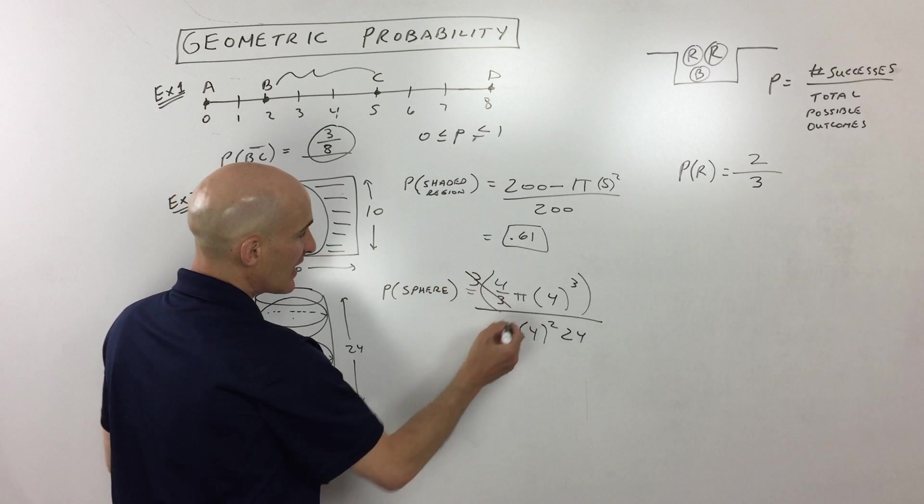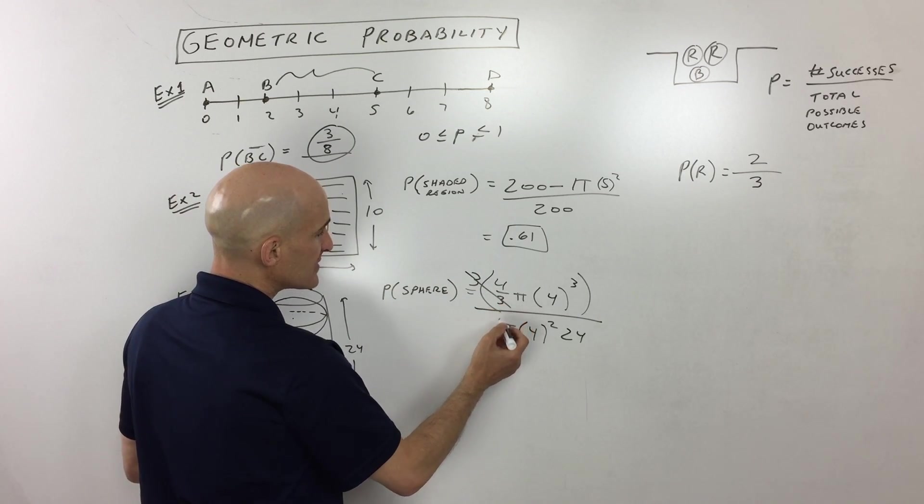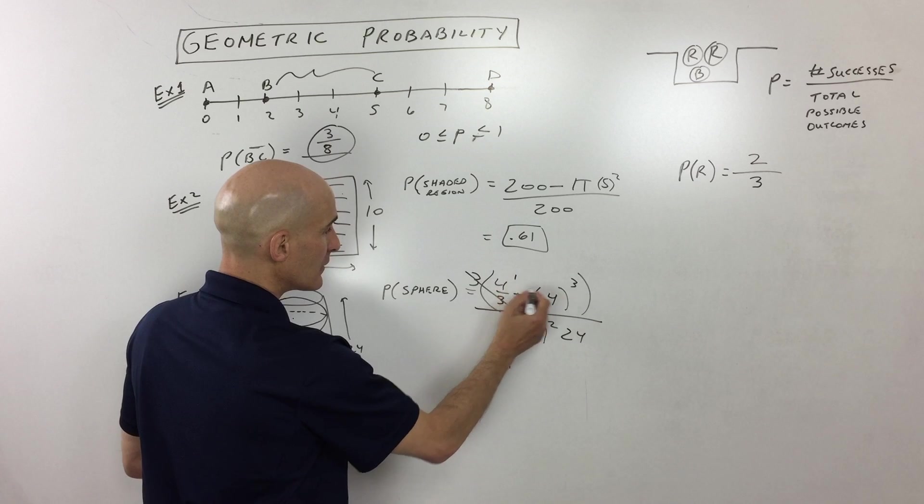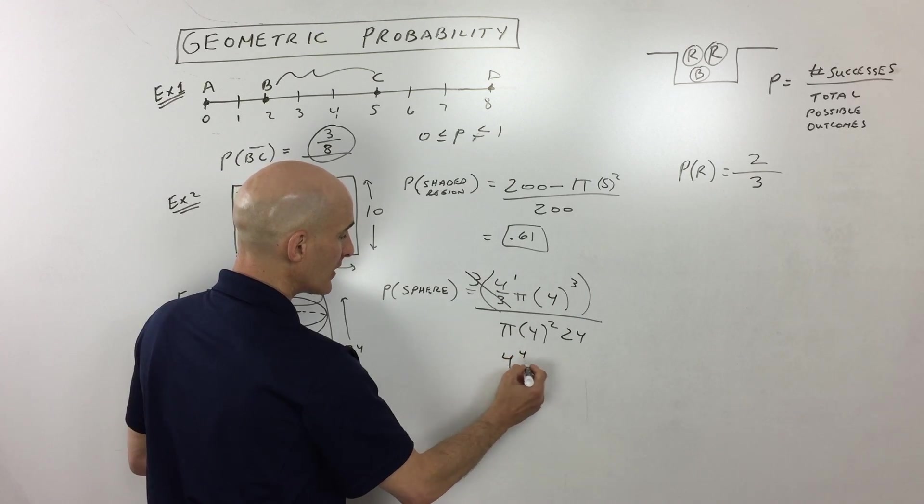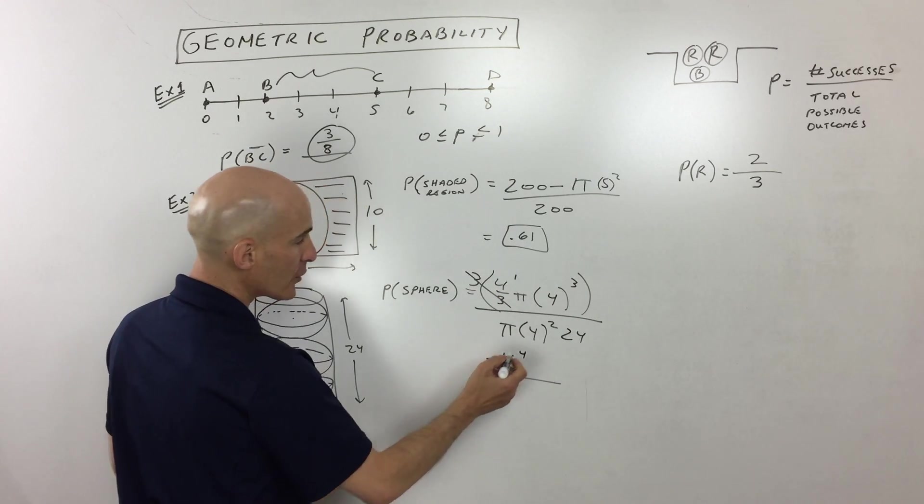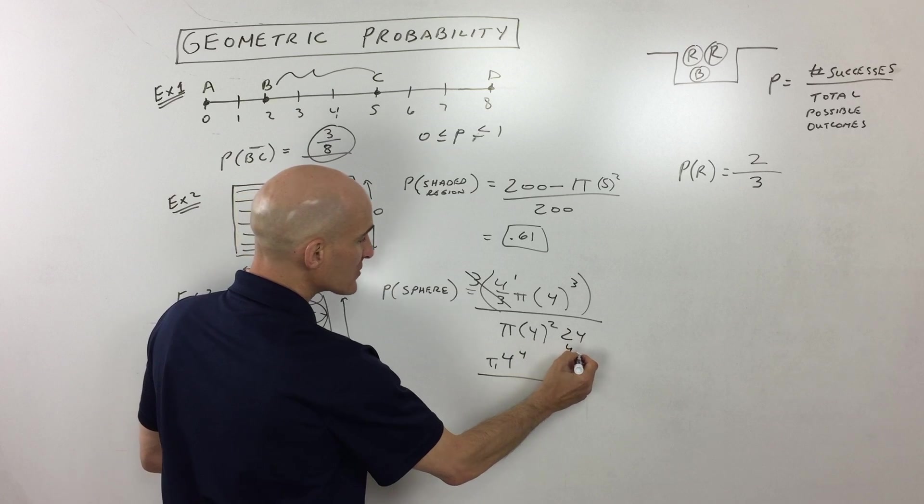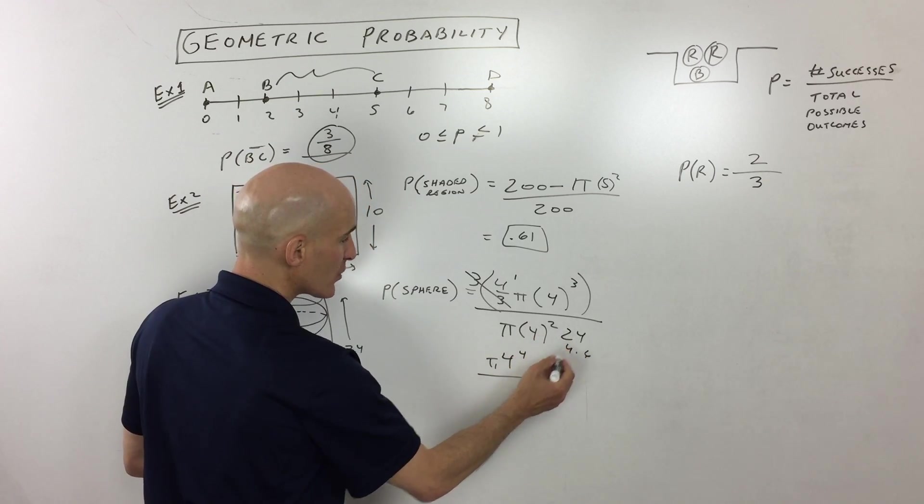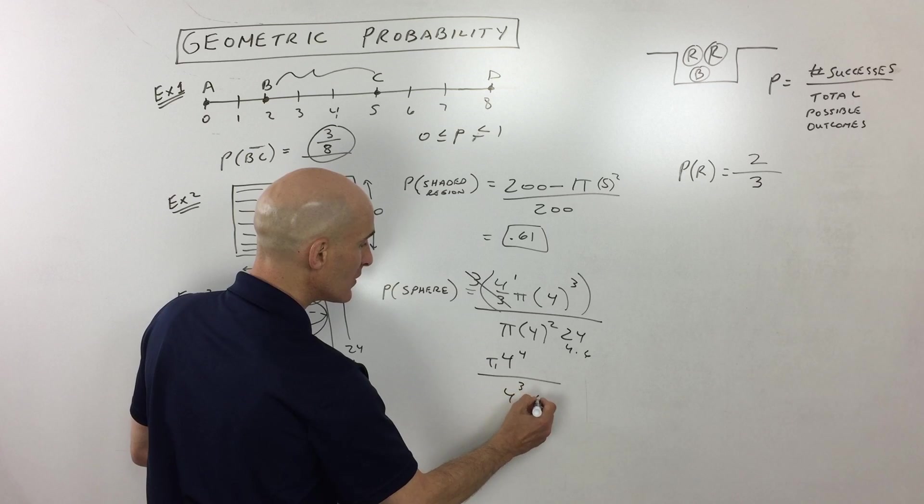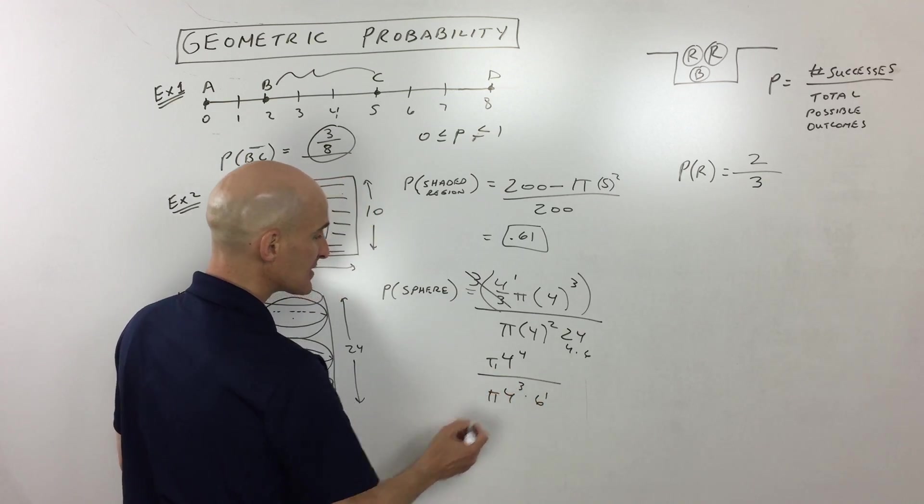So let's see if we can simplify this down a little bit. The threes are going to cancel. And then here we've got, let's see, this is going to be a four to the fourth times pi, right? That's the numerator. And then in the denominator, 24 is like four times six. So that's going to be four squared times four, which is four cubed times six to the first times pi.